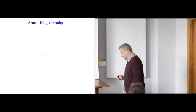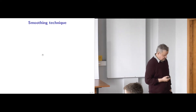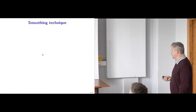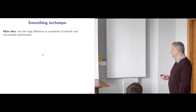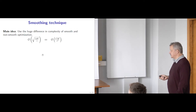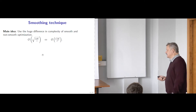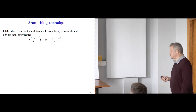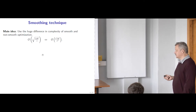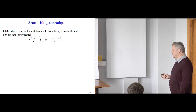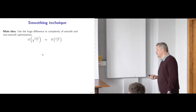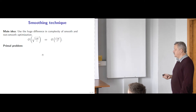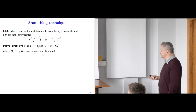We have also looked in this direction at methods which can work with this type of problems, considering the smoothing technique. The main idea is to use the huge difference in complexity between smooth optimization and non-smooth optimization. If you take 1% accuracy, here you get 10 from 1 over square root of epsilon, and there it is 10,000 — a really very big difference. Therefore, we decided to approximate our primal problem by a smooth one and solve these smooth problems.